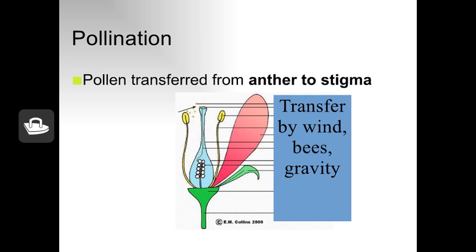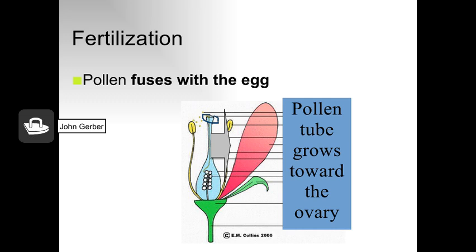Other plants rely on the wind to transfer pollen. The force of the wind physically moves pollen from one flower to another. Since there's no need to attract pollinators, these plants often do not produce colorful flowers with large petals, scents, or nectar. Once the pollen germinates on the stigma, it grows down through the style and fertilizes the ovary. Fertilization occurs when the pollen — the male sex cell — fuses with the egg cell to form an embryo, which becomes a developing seed.